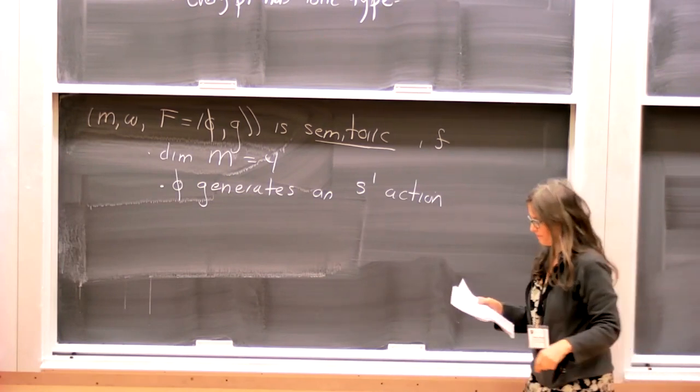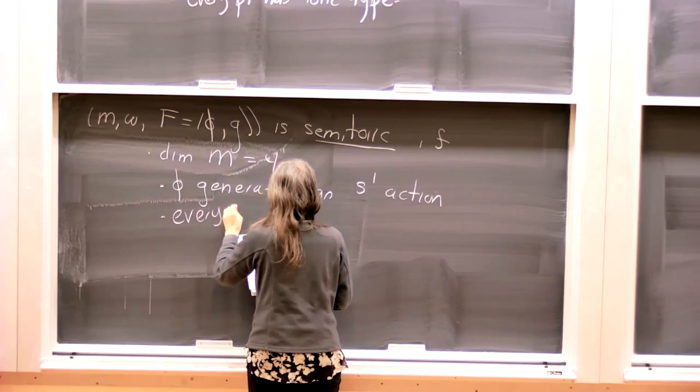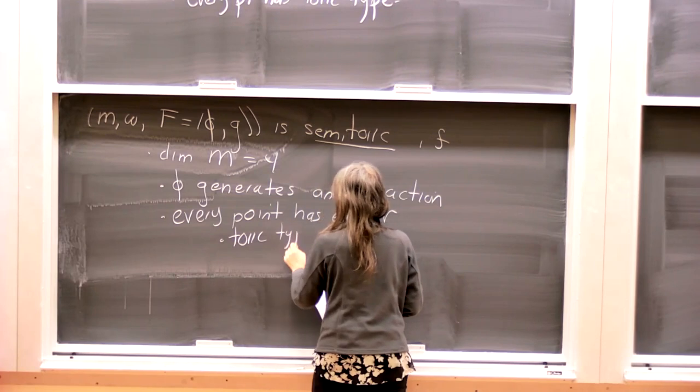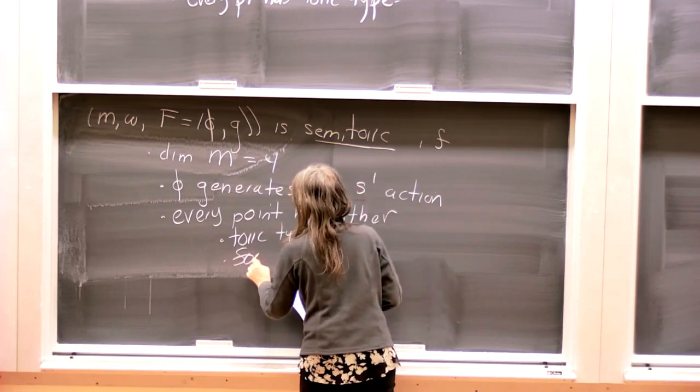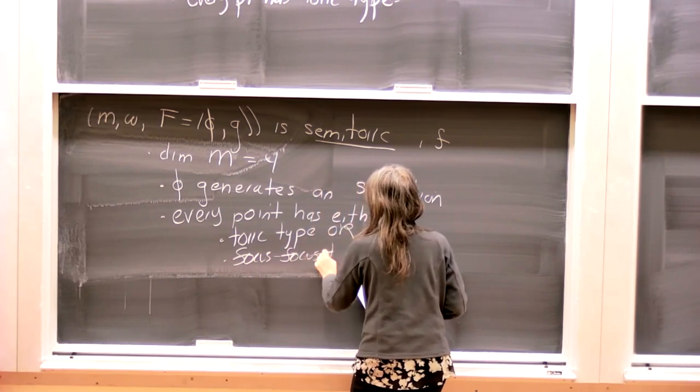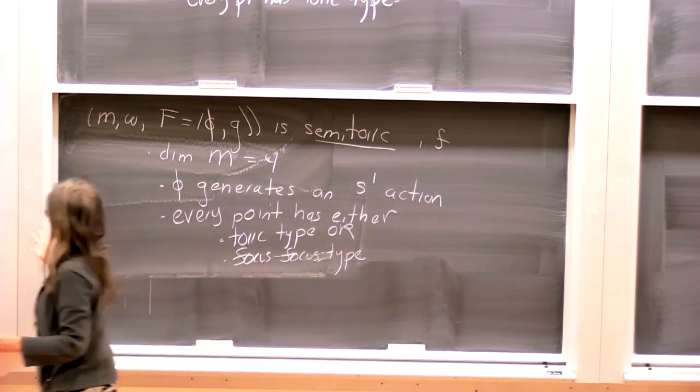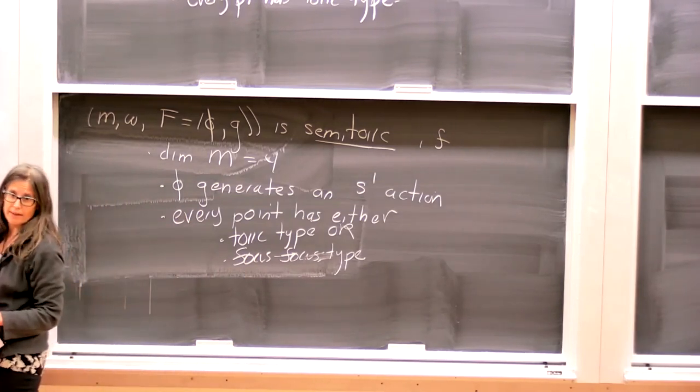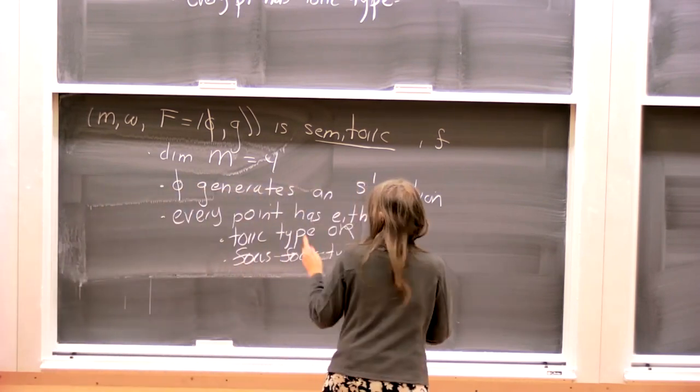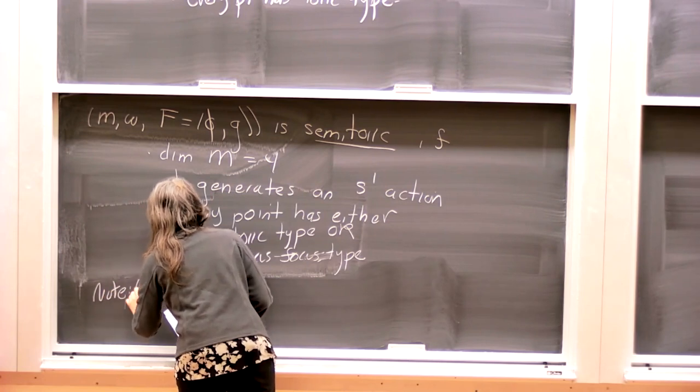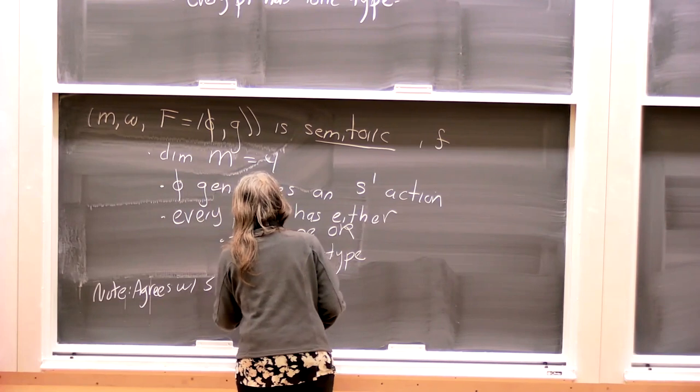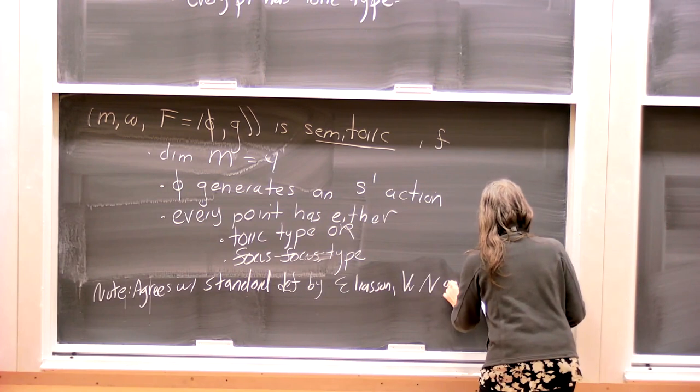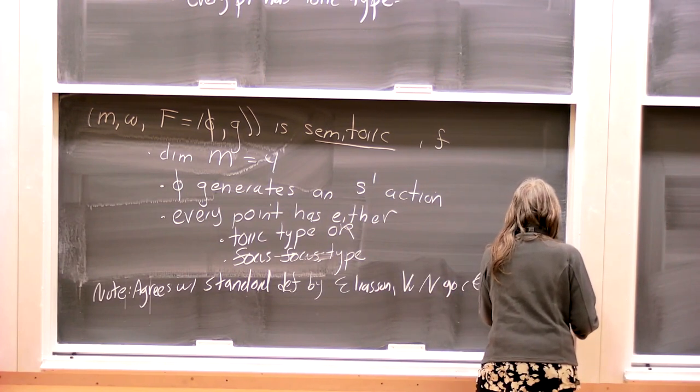And then phi generates an S1 action. So phi is just a moment map for a circle action. And then we also assume that every point has either toric type or focus-focus type. So we're going to insist that locally it either looks like focus-focus or toric. So of these we're just ruling out the hyperbolic case. And this agrees with the standard definition by work of Ilashenko, Vunok, Zung, and Chaperon.